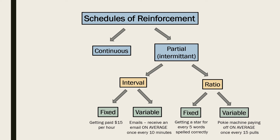Variable ratio schedules involve reinforcing behaviour after a varied number of responses — for example, gambling or fishing. A poker machine may pay off on average once every 50 pulls. This leads to both a high response rate and slow extinction rate due to the unpredictability of the reinforcement.